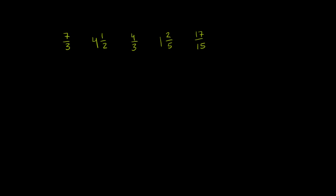Let's order these improper fractions and mixed numbers from least to greatest. There are two ways to do it: you could put them all as mixed numbers, or you could put them all as improper fractions. Let's try it as mixed numbers first, and then we could also try improper fractions.